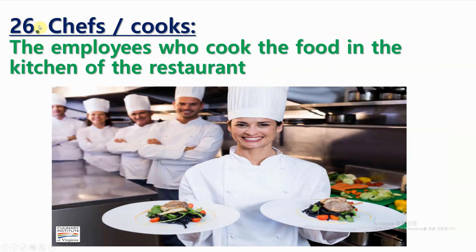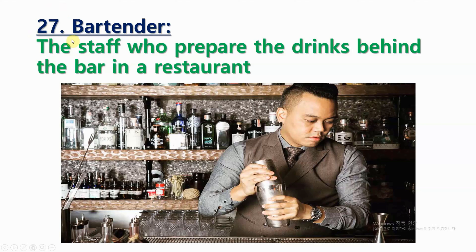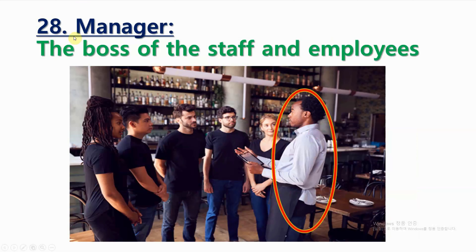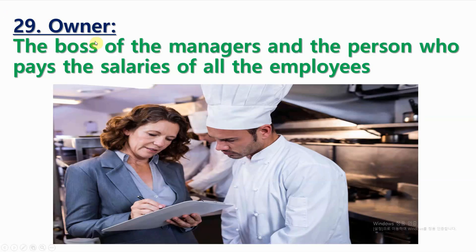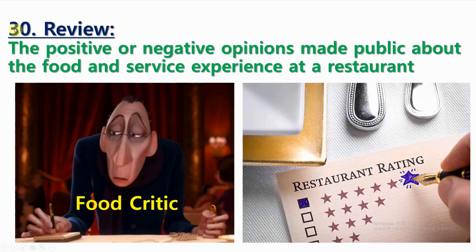Number 26: Chefs, or cooks. The employees who cook the food in the kitchen of the restaurant. Number 27: Bartender. The staff who prepare the drinks behind the bar in a restaurant. Number 28: Manager. The boss of the staff and employees. Number 29: Owner. The boss of the managers, and the person who pays the salaries of all the employees. Number 30: Review. The positive or negative opinions made public about the food and service experience at a restaurant.